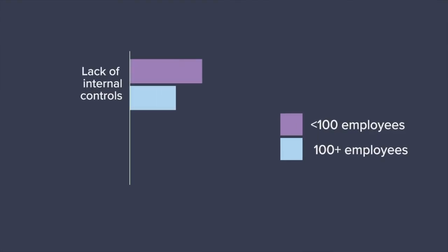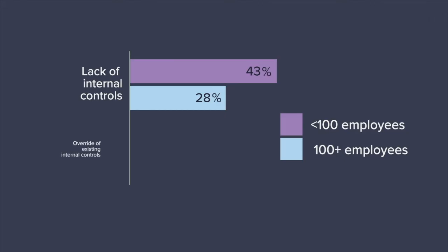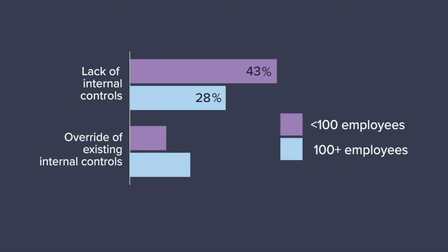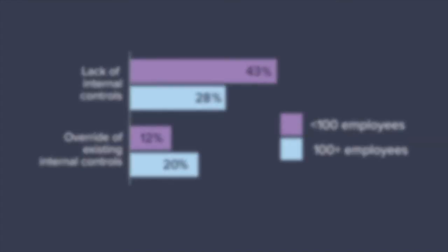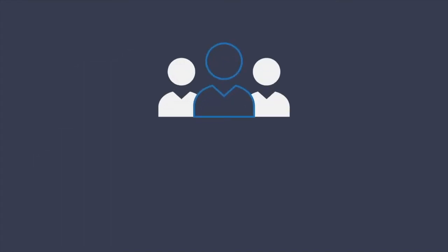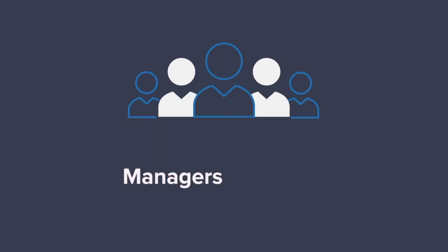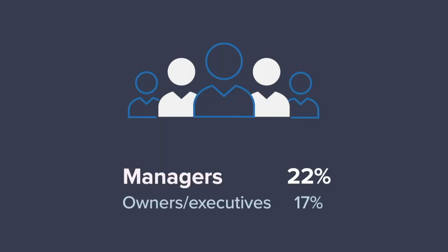Smaller organizations are more likely to lack internal controls, while larger organizations are more likely to have their controls overridden. Perpetrators in middle management are more likely to override existing controls than other perpetrators.